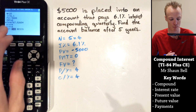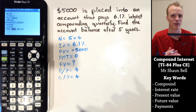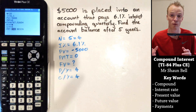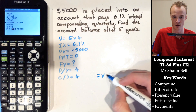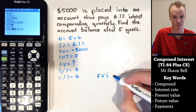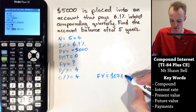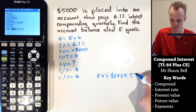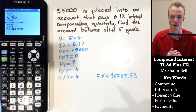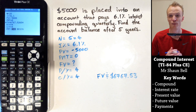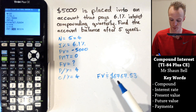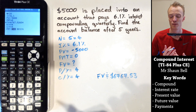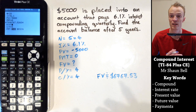You'll notice the future value is positive — this represents how much money you'll be able to withdraw from your account at the end of the investment term. Our future value is approximately $6,767.53. Therefore, at the end of the investment period, we can expect approximately $6,767.53 in our account. To find how much interest was earned, subtract the present value: $6,767.53 minus $5,000 gives approximately $1,767.53 in interest.